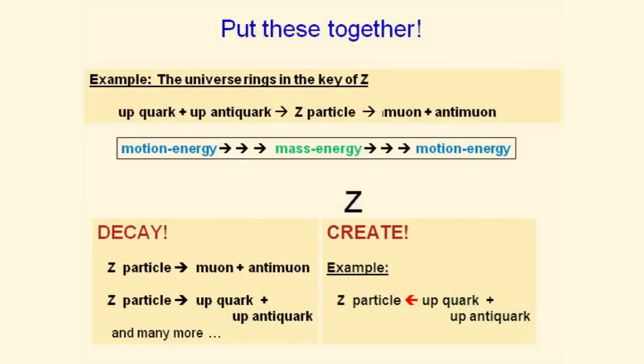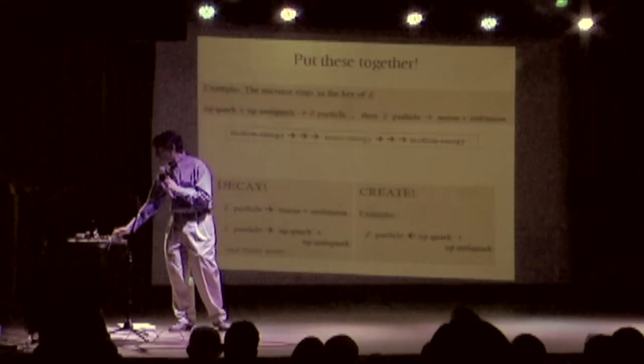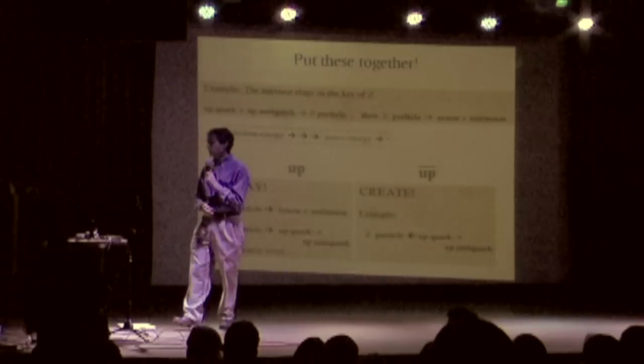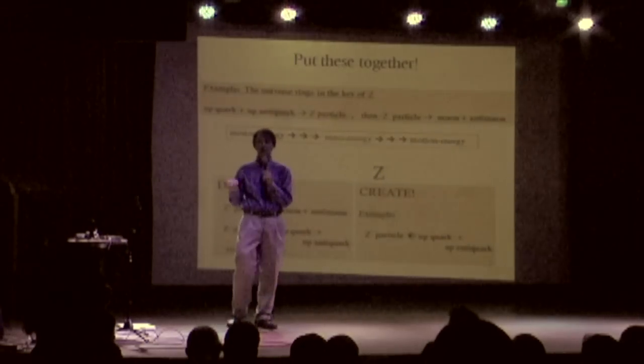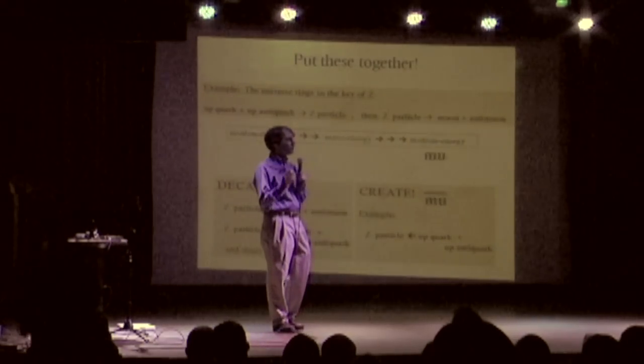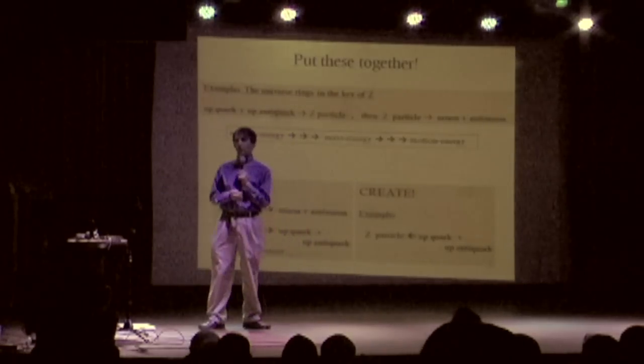We're going to take an upquark and an anti-upquark, smash them together, create a Z particle. The Z will hang around for a while, a trillionth of a trillionth of a second or so, and then turn into, let's say, a muon and an anti-muon. That's taking motion energy from the upquarks, turning it into mass energy of the Z particle, and then turning it back into motion energy of the muons.